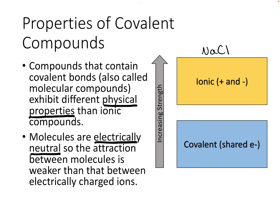For example, sodium chloride is an ionic compound where sodium forms a plus-one ion and chlorine forms a minus-one ion. They are attracted to each other through opposite charges, and that attraction is much stronger than the attraction between, say, two hydrogen molecules. H2 and H2 have very weak attraction because they're electrically neutral. So we have increasing strength going from covalent molecules up to ionic compounds.